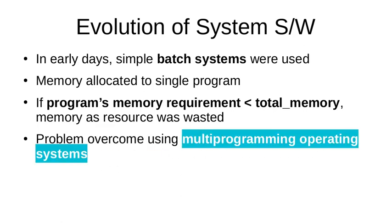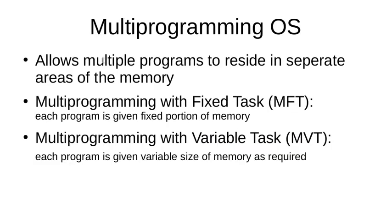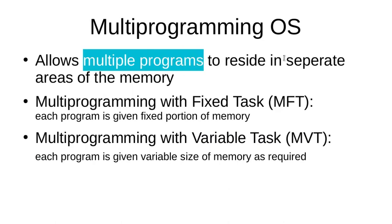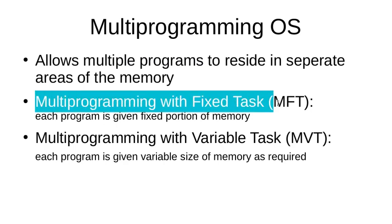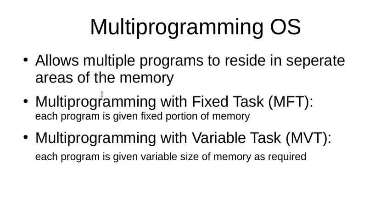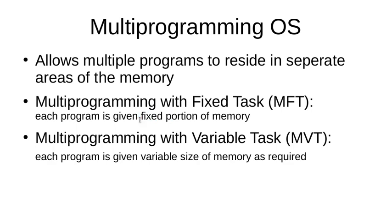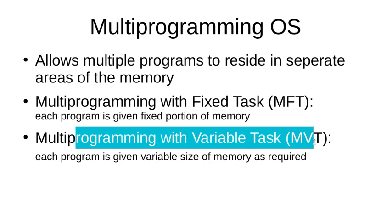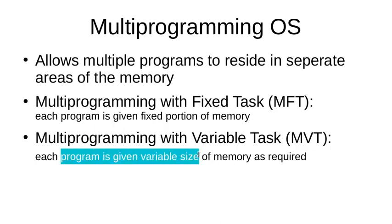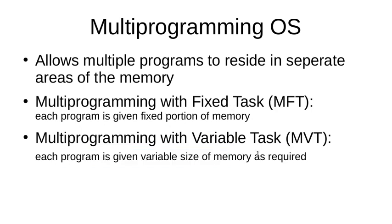Multiprogramming operating systems allow multiple programs to reside in separate areas of memory with no overlap or collision, so they can work independently. There are two types of multiprogramming approaches. The first is multiprogramming with fixed task, MFT, where each program is given a fixed portion of memory. The second is multiprogramming with variable tasks, MVT, where each program is given a variable size of memory as required.